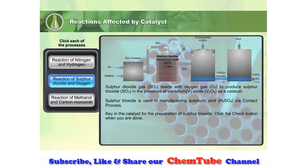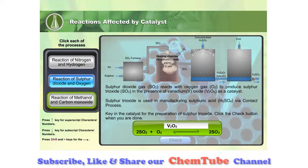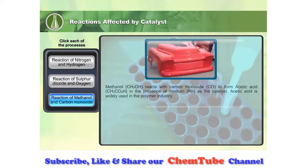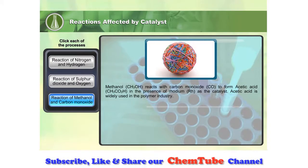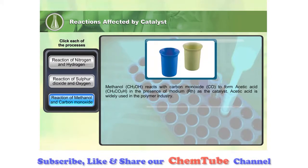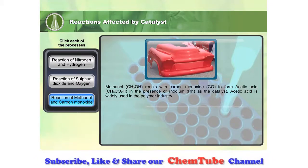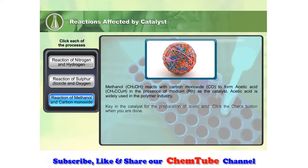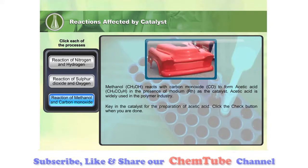Key in the catalyst used in the preparation of sulfur trioxide. Methanol reacts with carbon monoxide to form acetic acid in the presence of rhodium as the catalyst. Acetic acid is widely used in the polymer industry. Key in the catalyst used in the preparation of acetic acid. Click the check button when you are done.